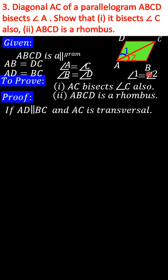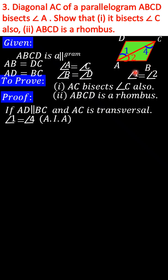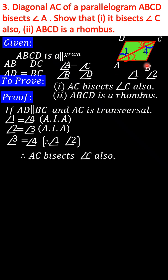Here AD is parallel to BC and AC is the transversal. So we can say angle 1 is equal to angle 4, because alternate angles are equal. Similarly, we can say angle 2 is equal to angle 3, as here also alternate angles are equal. Already it is given that angle 1 is equal to angle 2, so we can say angle 3 is equal to angle 4. Therefore, AC bisects angle C also.